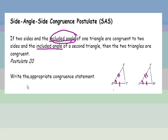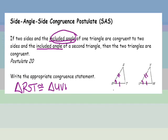So if I have triangle RST, when I write my congruence statement, it's going to be congruent to triangle UVW, because those are my corresponding angles. My reason for that would be side-angle-side congruence if I were writing this in a proof.